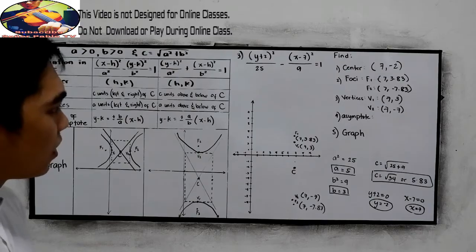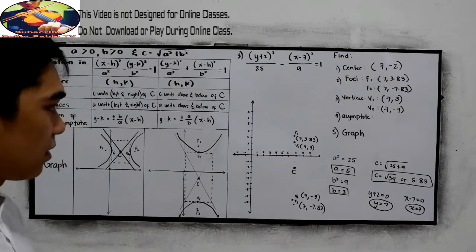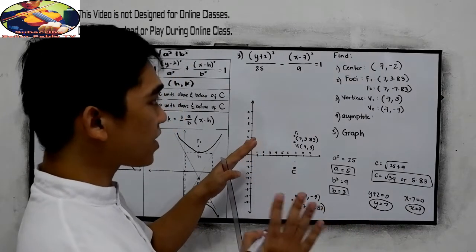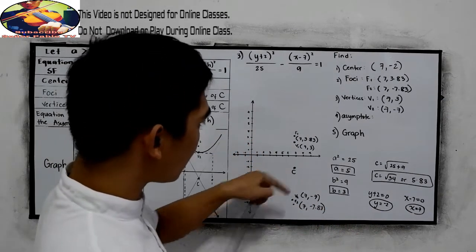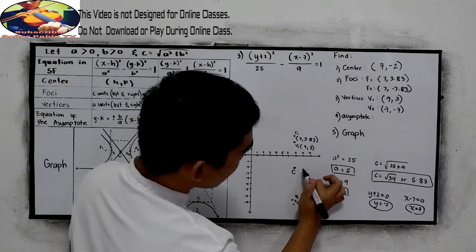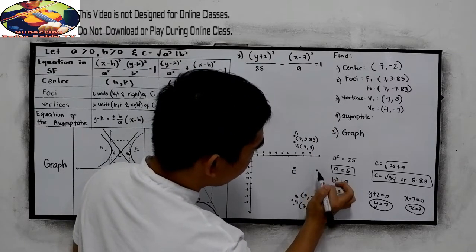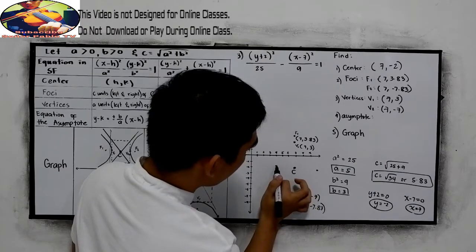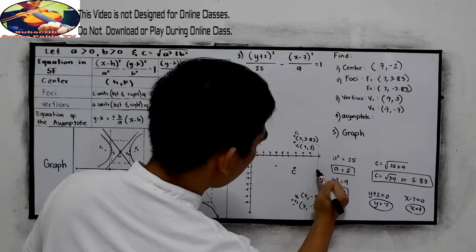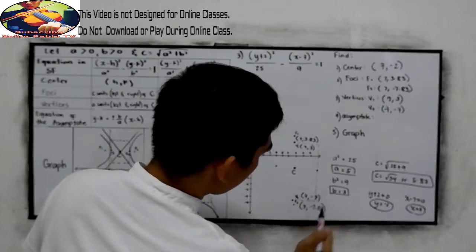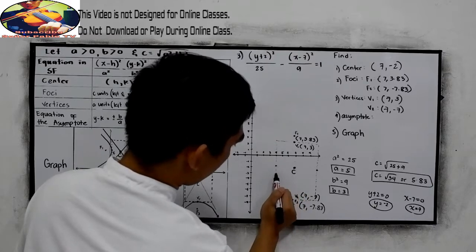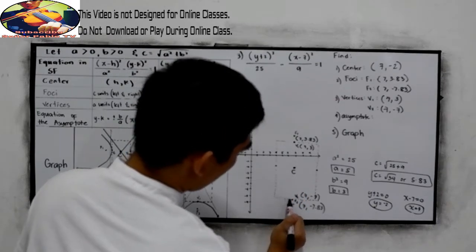Now, let us create our rectangle. So just like in the first and second example, we're going to create a rectangle. That is, we have now our vertices. Then the second one is B units. Our B is 3. So 1, 2, 3. Then 1, 2, 3. This will be the rectangle. That will be our rectangle.